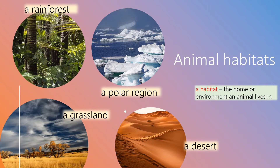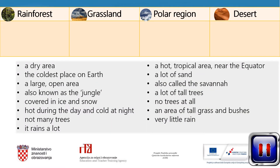Today, we will talk about four different types of habitats: a rainforest, a polar region, a grassland, and a desert. Here is the list of characteristics that describe certain habitats. Please copy this chart into your notebooks and sort out the characteristics under the correct heading. You may pause the video now and do the task.